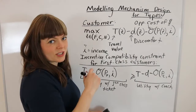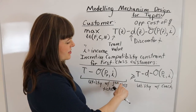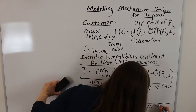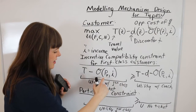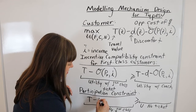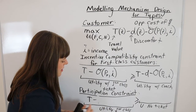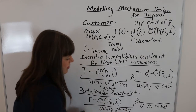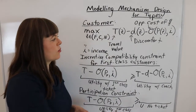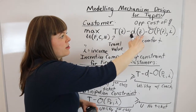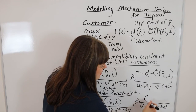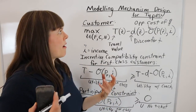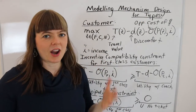Now the participation constraint: utility from the first-class ticket must be greater than or equal to utility from no ticket. We've already defined utility(first class) = T − OC(PF, I). Utility from no ticket is zero — no travel, no discomfort, no opportunity cost. So the participation constraint is simply T − OC(PF, I) ≥ 0. That's how you add more complexity to a mechanism design model of the airline problem.